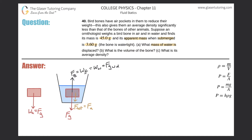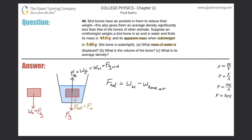Now let's create our equation. The net force equals the summation of the two forces: the buoyant force — which is the weight of the water displaced — minus the force due to gravity on the bone, which is the same as the weight of the bone in air. Don't forget: the net force is pointing downward, so this has to be a negative vector.